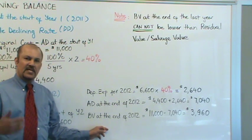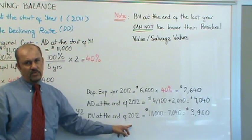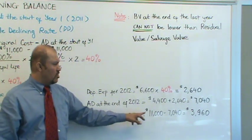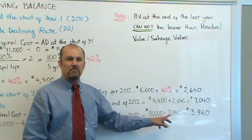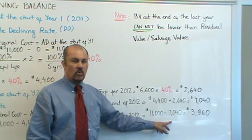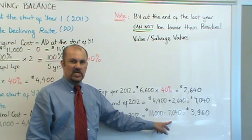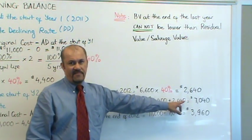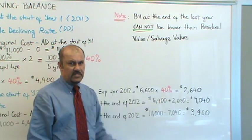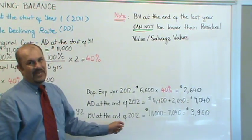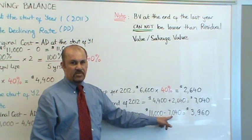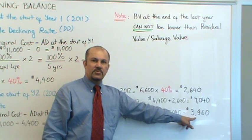What is your book value at the end of 2012? Book value is original cost, $11,000, minus your accumulated depreciation at the end of 2012. We just calculated our accumulated depreciation at the end of 2012 as $7,040, which was year one plus year two depreciation. So your book value at the end of 2012 would be $11,000 minus $7,040, equal to $3,960.